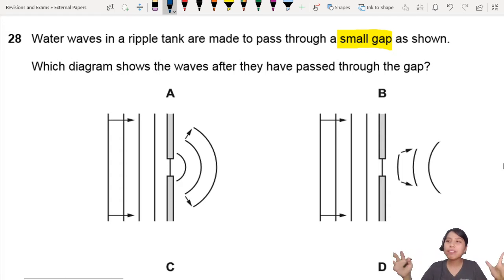Which diagram shows the waves after they have passed through the gap? It goes through that. So you need to know that diffraction means when there is a barrier. So here you have a barrier, you have another barrier. The waves will pass the barrier and spread out. So spread out like this. You see, that's why the wave fronts are curved, because the wave is spreading out.